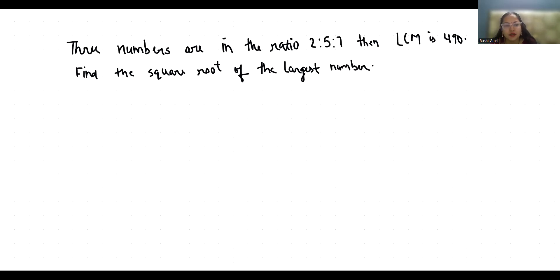Let's start with today's video solution. The numbers are in ratio, so we can write: let the numbers be 2x, 5x, and 7x. The LCM of 2x, 5x, 7x is 2 times 5 times 7 times x.